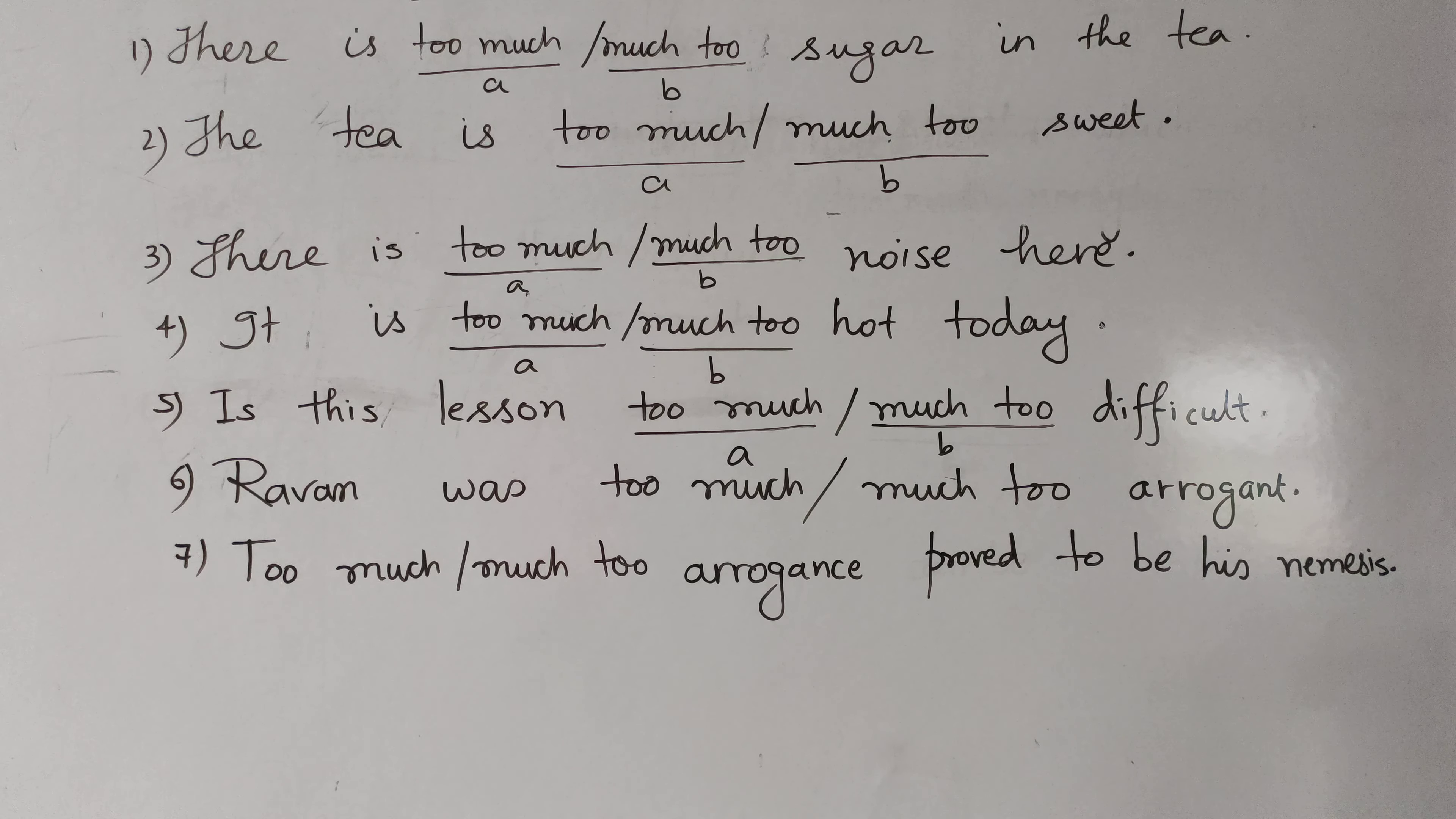Three. There is too much, much too noise here. There is too much noise here. A is the right option. Now, if you're thinking I'm only giving you correct answers, let me tell you. By the time all these 7 questions are answered, hopefully you will have figured out what is the rule. And if you haven't, then I will help you.